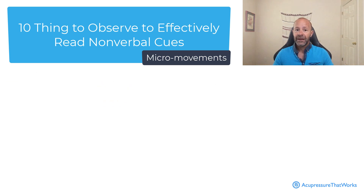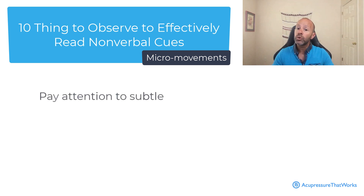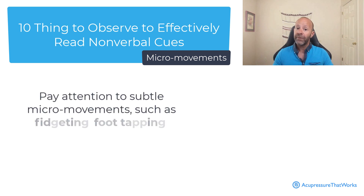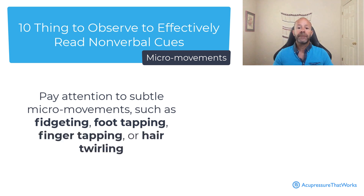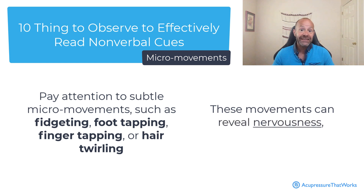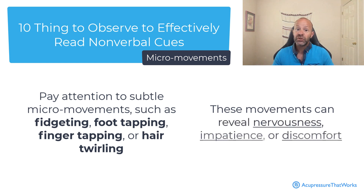Micromovements. Apart from large gestures, also pay attention to subtle micro movements, such as fidgeting, foot tapping, finger tapping, and hair twirling. These movements can reveal nervousness, impatience, or discomfort.